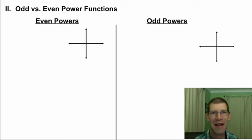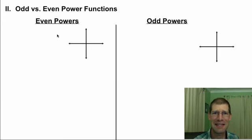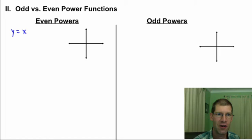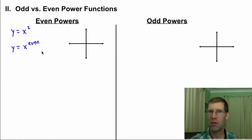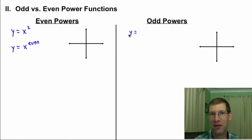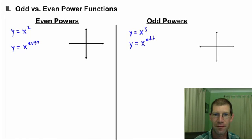The last part of this section talks about odd versus even power functions. An even power function is something like y equals x squared, y equals x to the fourth, or y equals x to the fourteenth — any y equals x to some even exponent. With odd powers, that'd be something like y equals x to the first, y equals x to the third, or y equals x to the ninth — y equals x to some odd power.